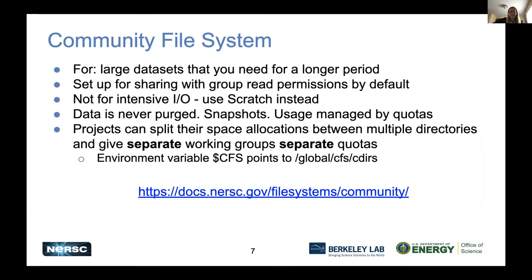Moving on to the next layer: the community file system. This is intended for large data sets that you need for a longer period, on the order of one to two years. It's set up with group read permissions, so every project gets a directory — if you're m1234, it would be an m1234 directory, accessible at the path /global/cfs/cdirs/m1234 or via the $CFS shortcut. It's intended for sharing and long-term storage, not for intensive IO. Data on the community file system is never purged, and we back it up using snapshots with a seven-day record you can access yourself.